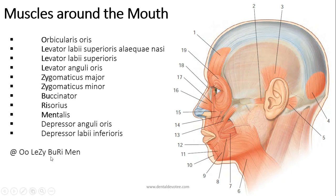Buri in Hindi means bad, lazy bad men. O stands for orbicularis oris and orbicularis oculi, but we're talking about muscles around the mouth only, so this is orbicularis oris. From lazy, L stands for all the levators, Z stands for zygomaticus major and minor.